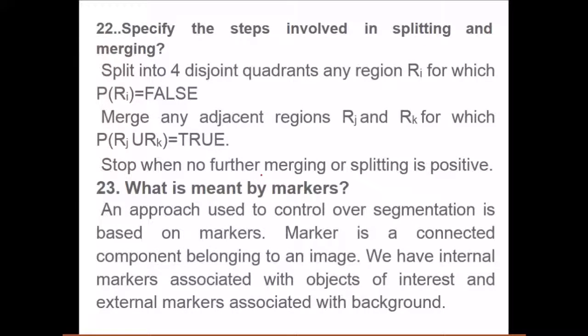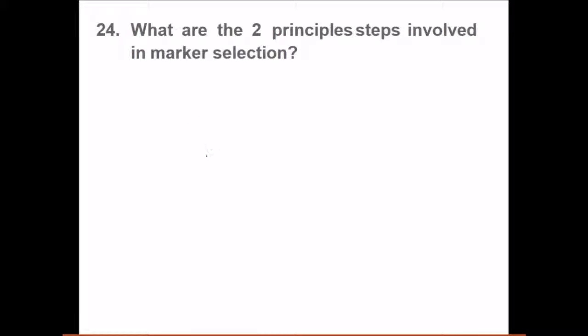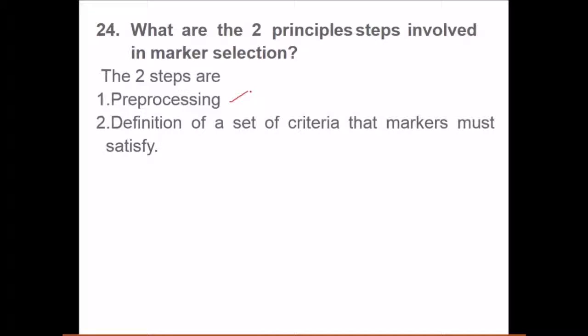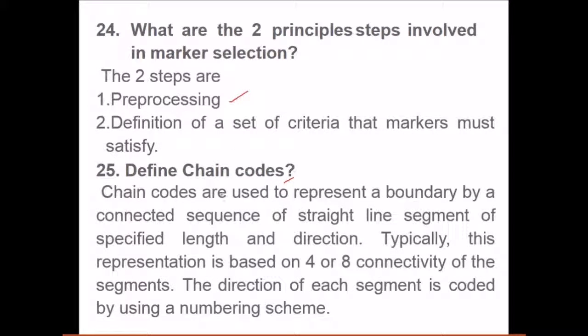What is meant by markers? An approach used to control over-segmentation is based on markers. A marker is a connected component belonging to an image. We have internal markers associated with objects of interest and external markers associated with the background. What are the two principles or steps involved in marker selection? First, pre-processing, and then defining the set of criteria that markers must satisfy.